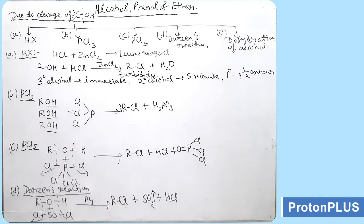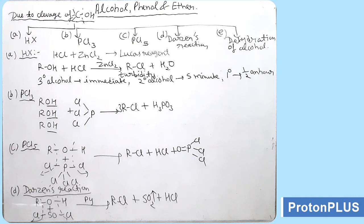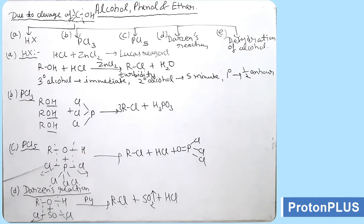Next, Darzens reaction: alcohol reacts with thionyl chloride SOCl2 in presence of pyridine (a base). The products are RCl, HCl, and SO2 as gaseous byproduct which is removed. HCl (acid) reacts with pyridine (base) to form a salt, and in this way the best yield of alkyl chloride is obtained by Darzens reaction.